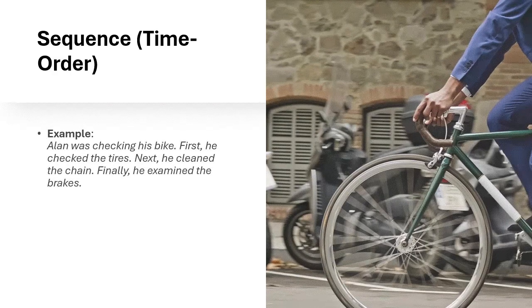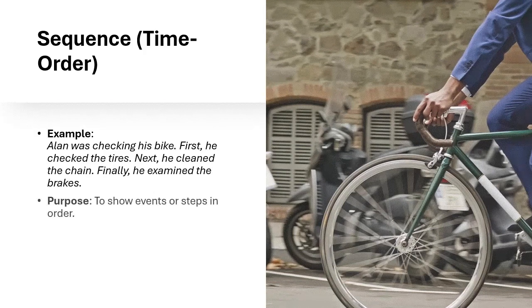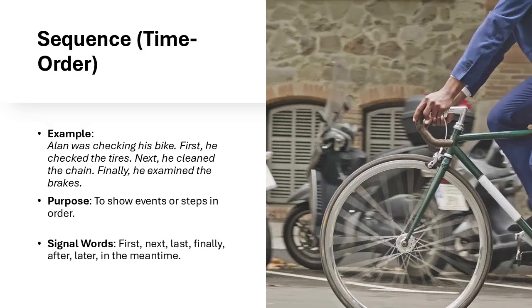Next, we have sequence, or time order. This method is all about presenting events in the order that they happened. You'll use it when writing narratives or explaining processes. Let's say you're describing Alan checking his bike before a ride. You would start with what he did first — maybe checking the tires — then move on to cleaning the chain, and end with him examining the brakes. This pattern is essential for making sure your reader can follow a chronological flow without getting confused about what happened when. Transition words like first, then, and finally are key here to guide the reader through the sequence.